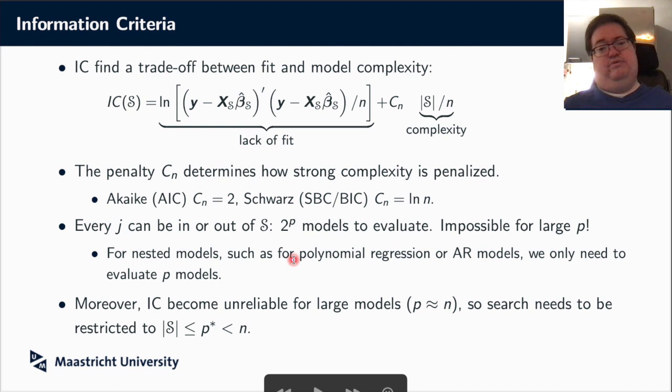So two particular forms which are very, very often occurring are the Akaike information criterion, also called AIC, which puts C_n equal to 2, and the Schwarz information criterion, which is sometimes called the Bayesian information criterion as well, which puts C_n to ln of n. So this one puts a larger value than the Akaike, which means that you put stronger penalty here. So if you use BIC, you will tend to choose smaller models than if you use AIC.